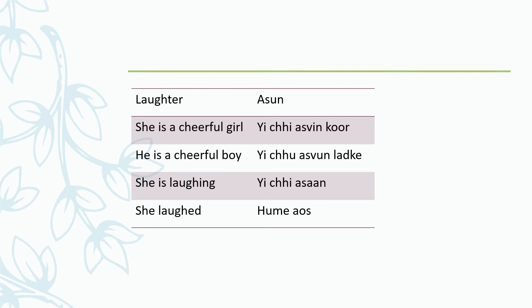Some of you have confusion between what is Asun and what is Asan. For laughter, we say Asun — laughter is Asun. When you want to say 'she is a cheerful girl', you use the word Aswin: yic Aswin coor. 'He is a cheerful boy': yic Aswin ladka. Boy is also called coor but I prefer to use the word ladka.